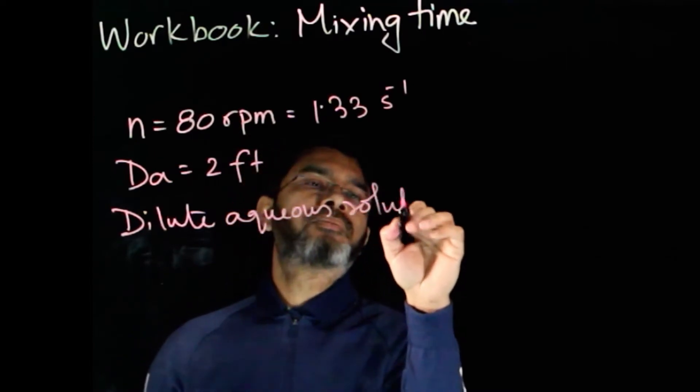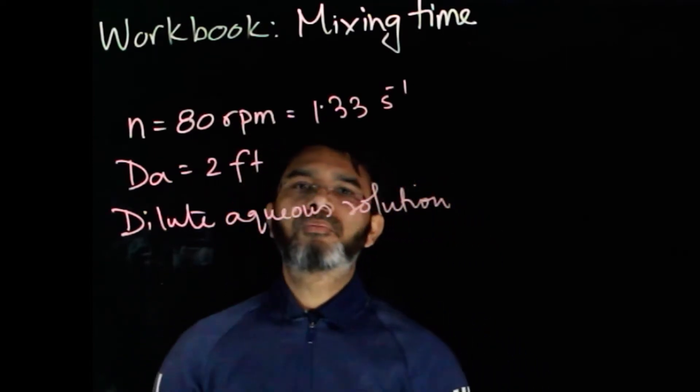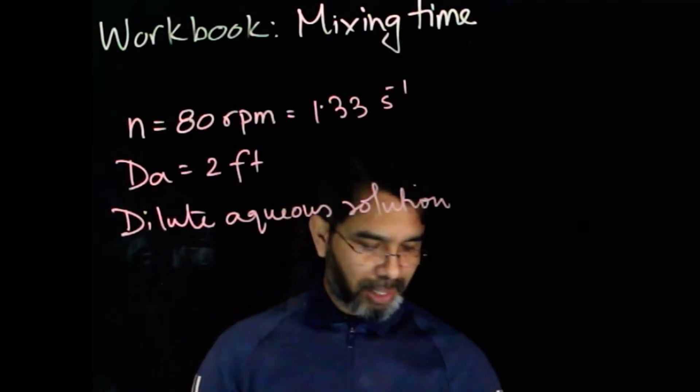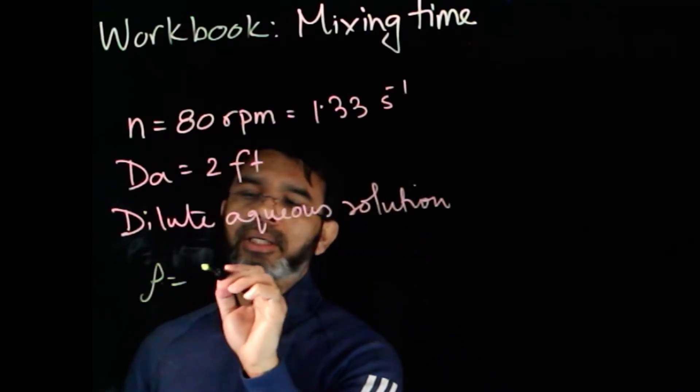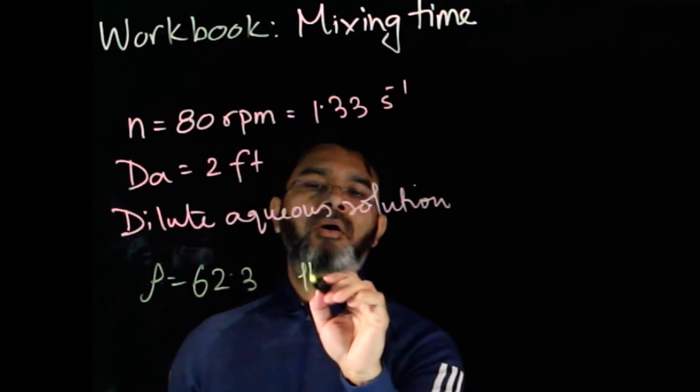We'll use the properties for water, so we have ρ to be 62.3 pounds per cubic foot.